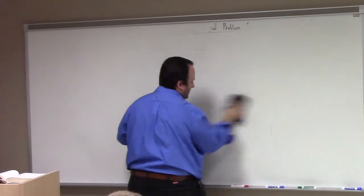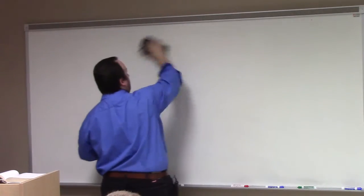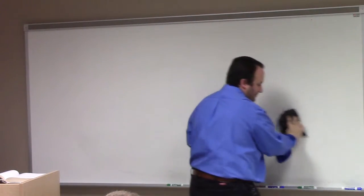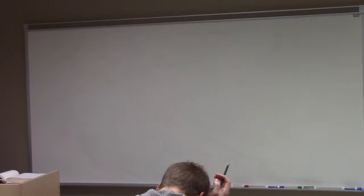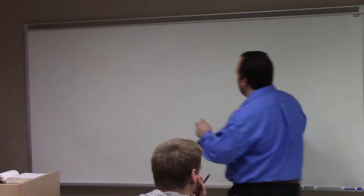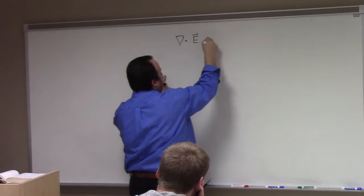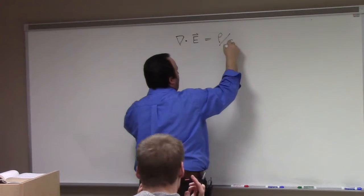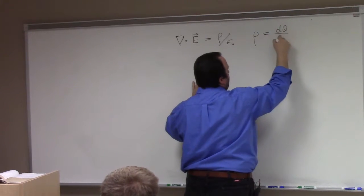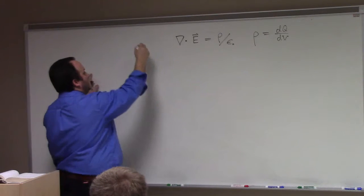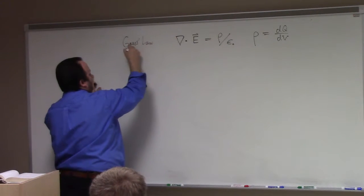Let me explain what the Laplace equation is and why we care about it. If you study electricity and magnetism — in particular the case of electrostatics, which means that charges aren't moving around, they've settled down — the critical equation in the middle of everything is this: the divergence of the electric field equals the charge density divided by epsilon naught, where rho is dq dv. This is Gauss's law.